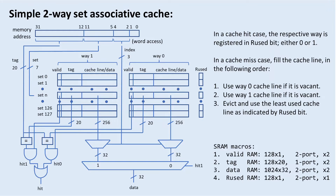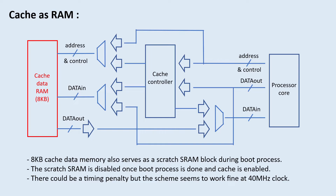The LRU used bit SRAM is what I use to record the latest accessed way in case I need to do a cache eviction. In addition to implementing a cache memory, I also use the cache data memory macro as a scratch SRAM. The 8 kilobytes cache data memory is mapped to a regular 8 kilobytes memory space when used as scratch SRAM during boot process.